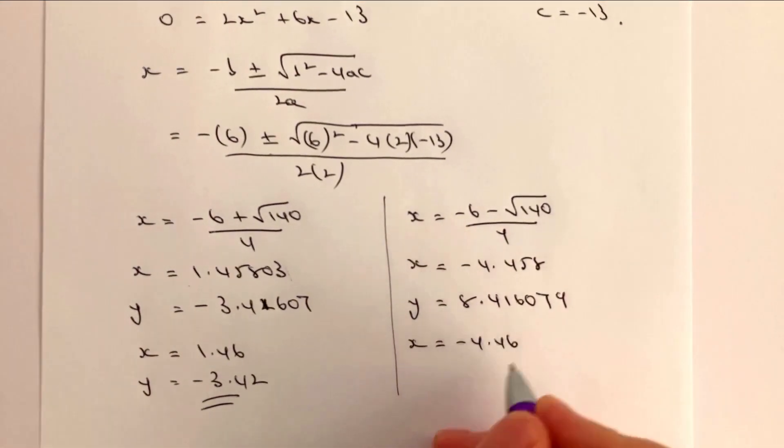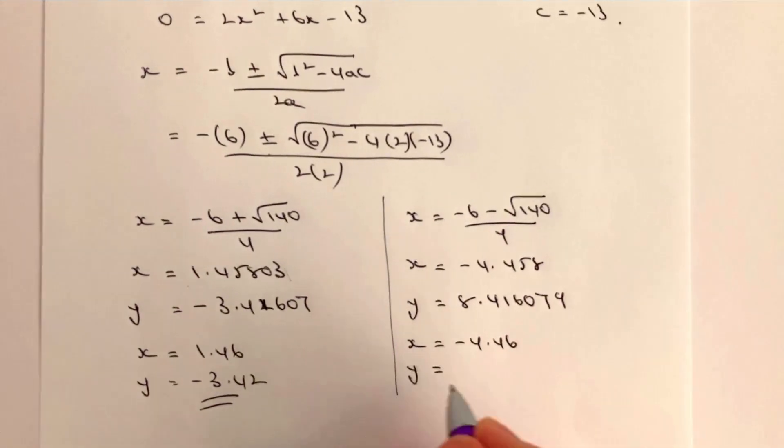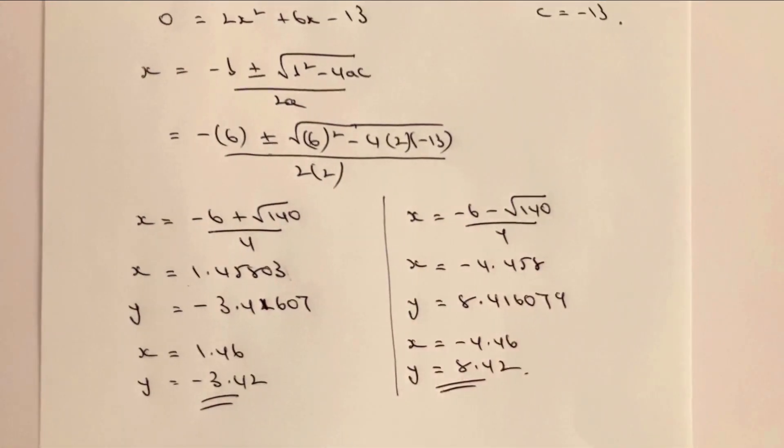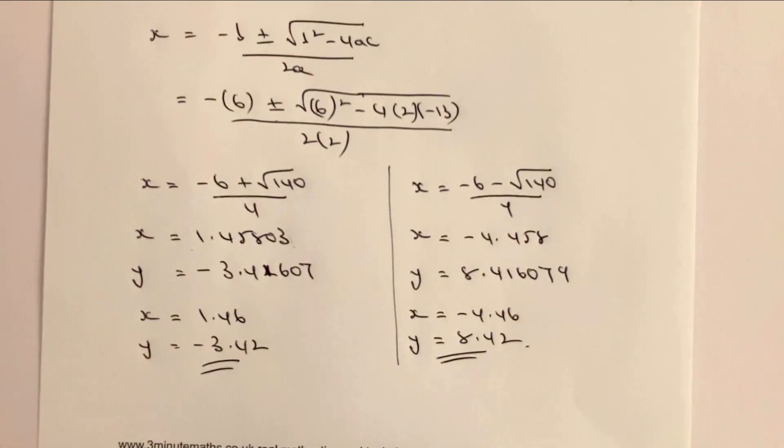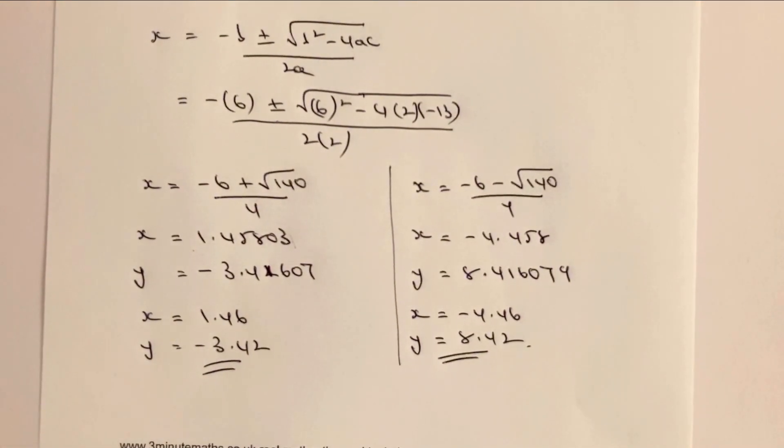Okay, so therefore to two decimal places x equals minus 4.46 and y equals 8.42, and that would be the answer to that particular question. Okay, I do appreciate that was quite challenging.